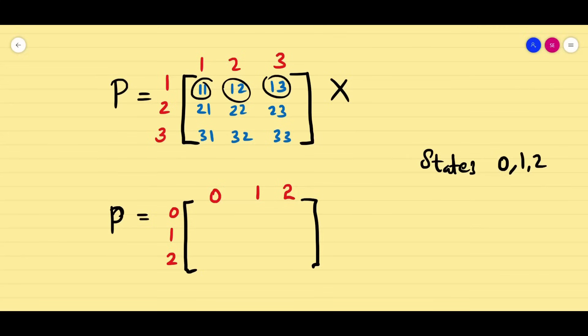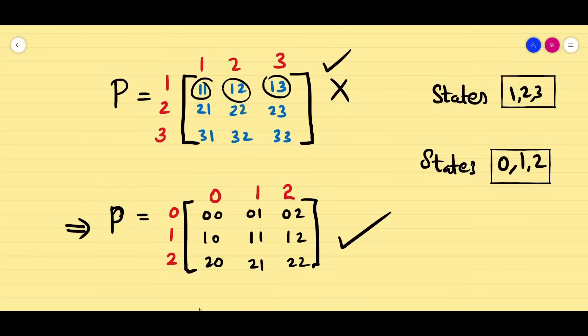So that means you should not take like this, because you are habituated to take a matrix always array like (1,1), (1,2), (1,3), but here it is very important the states are given as 0, 1, 2. So when you solve the problem, you should be careful: this position is (0,0), then (0,1), (0,2), (1,0), (1,1), (1,2), (2,0), (2,1), (2,2). So this is the correct positioning because the states are given in the problem as 0, 1, 2.